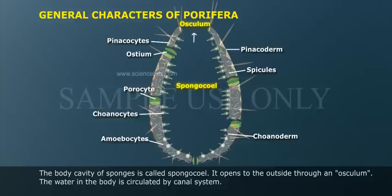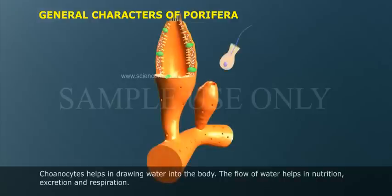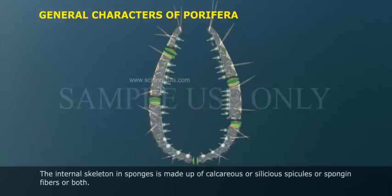The water in the body is circulated by a canal system. Choanocytes help in drawing water into the body. The flow of water helps in nutrition, excretion, and respiration. The internal skeleton in sponges is made up of calcareous or siliceous spicules, spongin fibers, or both.